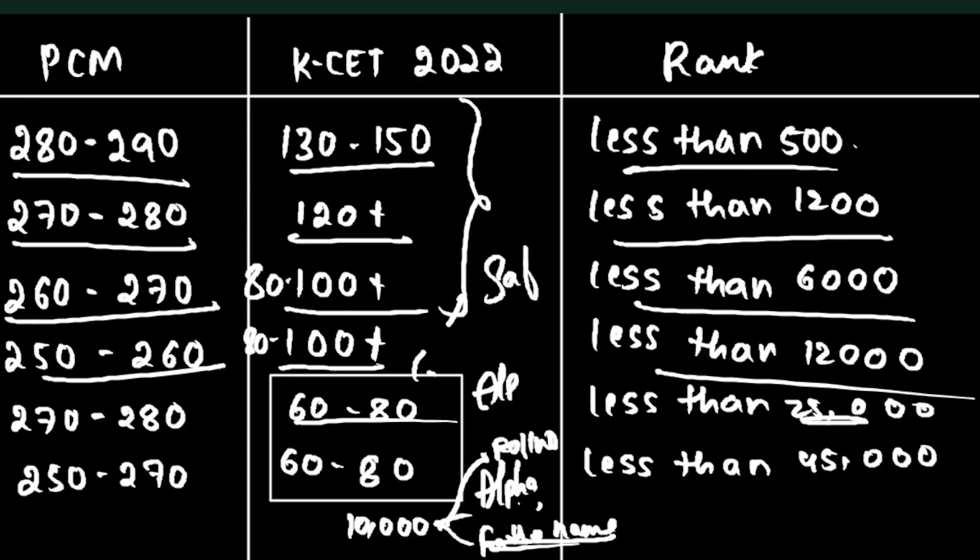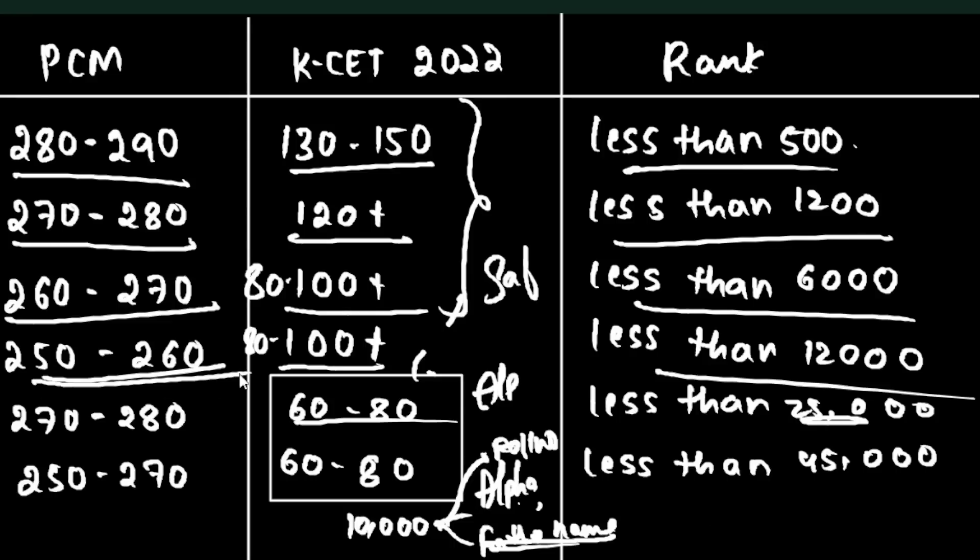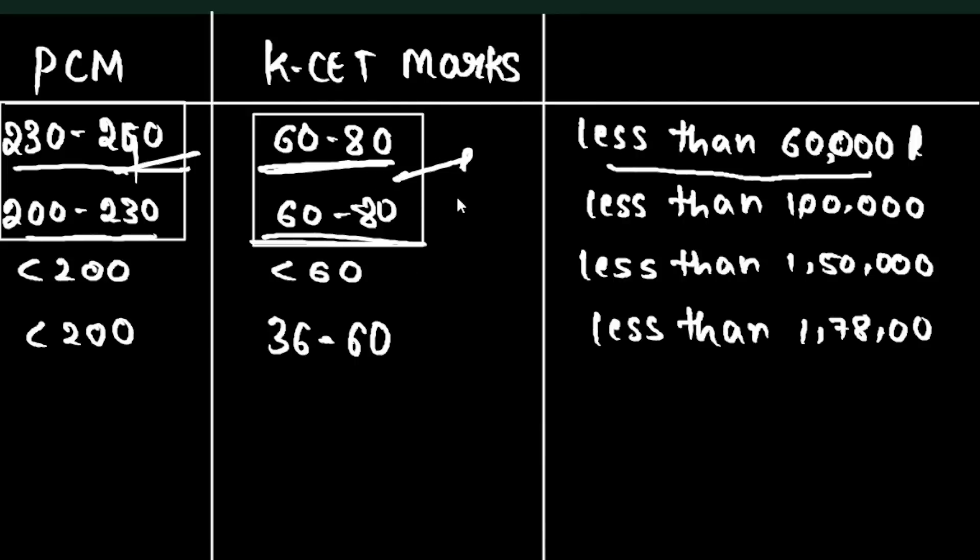For 260-280 K-CET marks with 60-80 board marks, you'll get a safe rank. With 230-240 K-CET marks, you'll get less than 60,000 rank. With 200-230 K-CET marks and decent board marks, you can still get a reasonable rank.